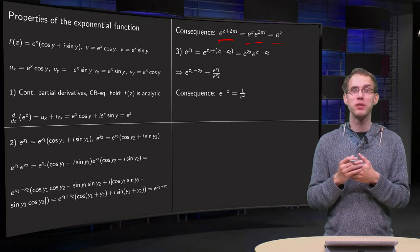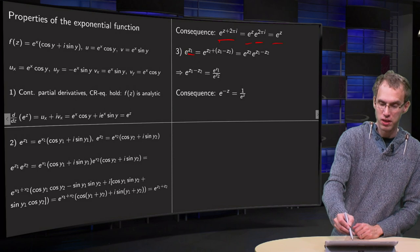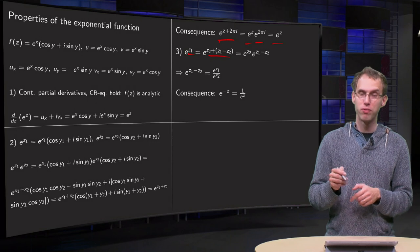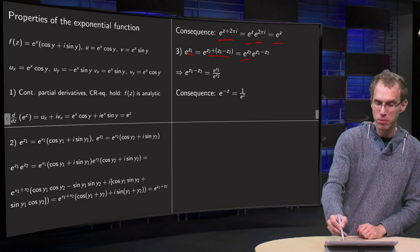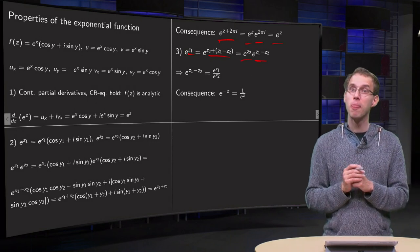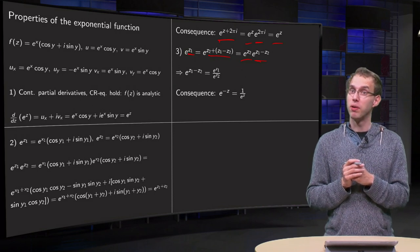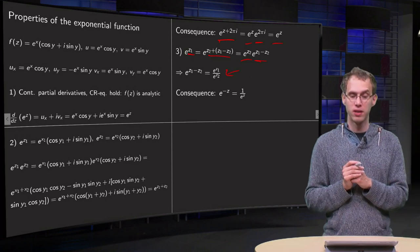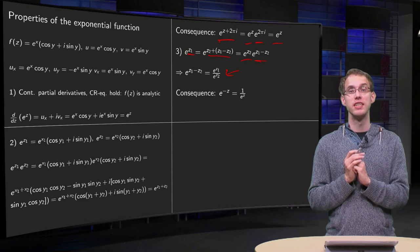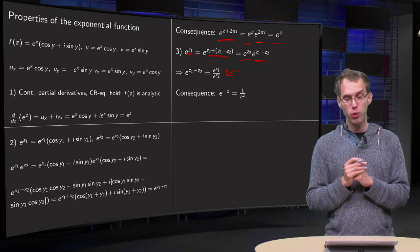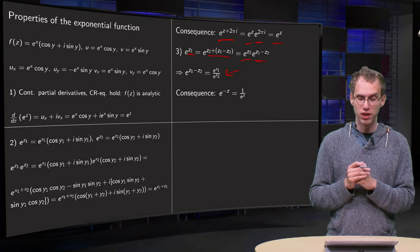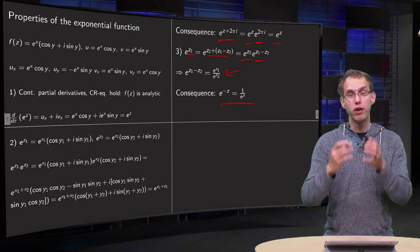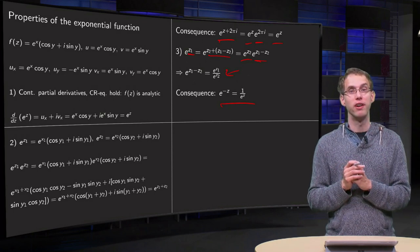Back to the nice properties: you can write e^z1 as e^(z2 + z1 − z2), split this up as e^z2 times e^(z1−z2), which allows us to compute e^(z1−z2) = e^z1 / e^z2. So this familiar rule also holds. And if you set z2 to 0, you find e^(−z) = 1 / e^z.